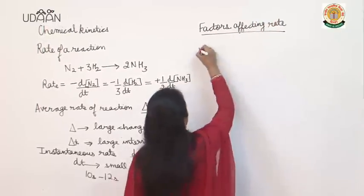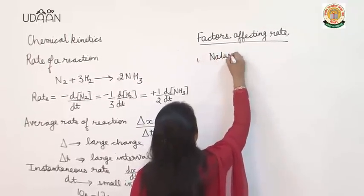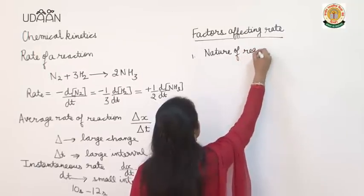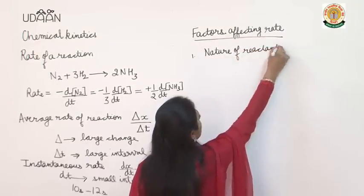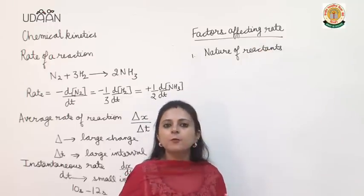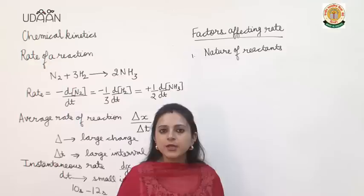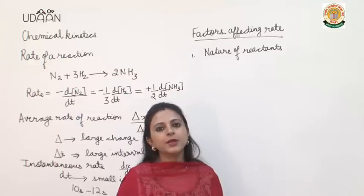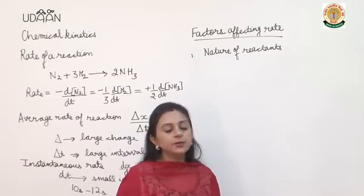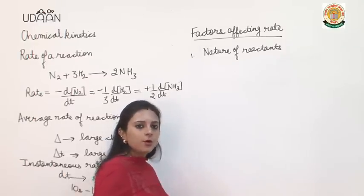Now let us study what are the various factors which affect the rate of reaction. The first factor is nature of reactants — different reactants react at a different rate because the bond breaking and bond making requires different energies in case of different reactants, so the rate of reaction changes accordingly.